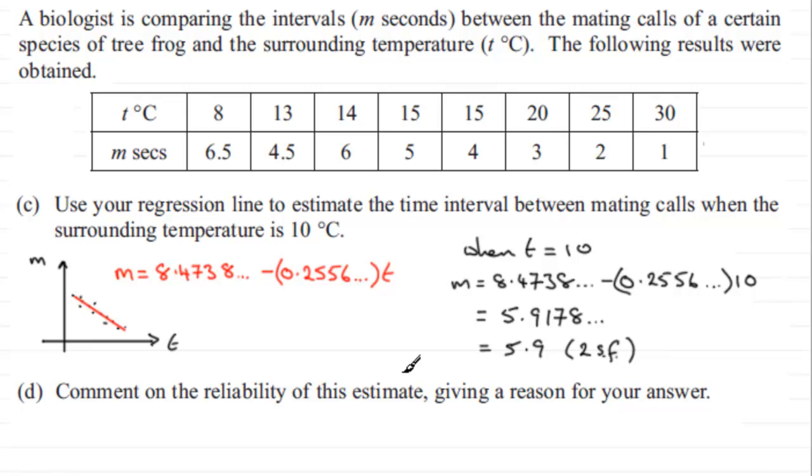And we're asked to comment on the reliability of this estimate, giving a reason for your answer. Well, the point is that our data here goes from the lowest value, 8. So on the axis t here, this is going to go from 8 all the way up to the highest value of 30.